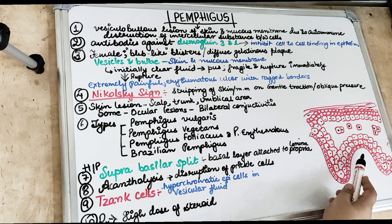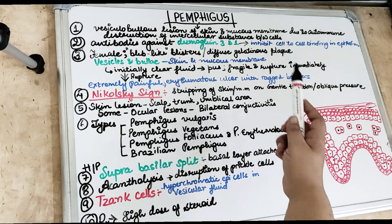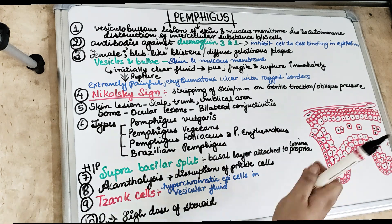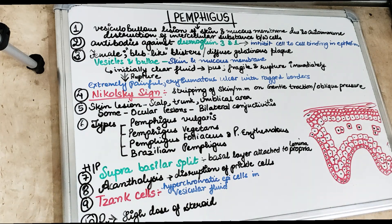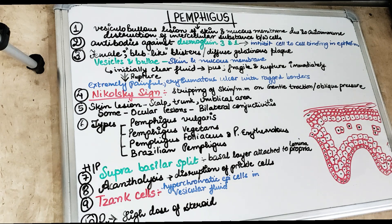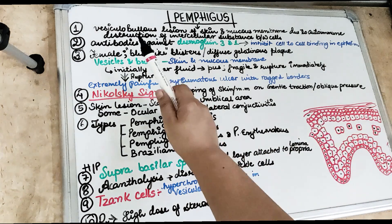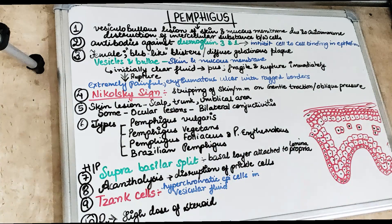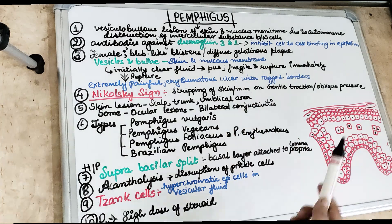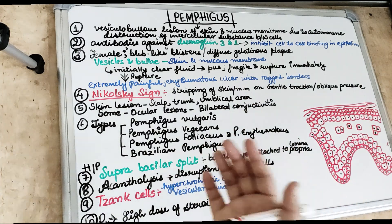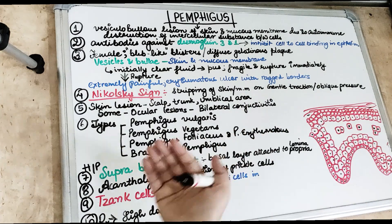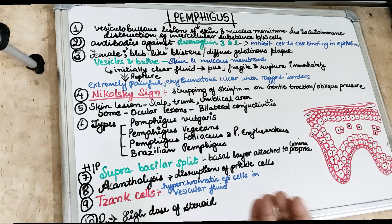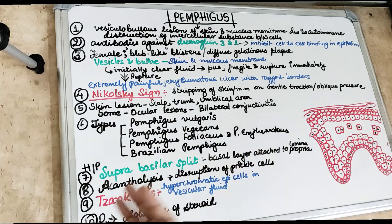As you can see in the diagram, the basal layer and the upper layer of the epithelium get separated and vesicles are formed. It is a vesiculobullous lesion of the skin and mucous membrane, which is due to the autoimmune destruction of the intercellular substance between the cells.